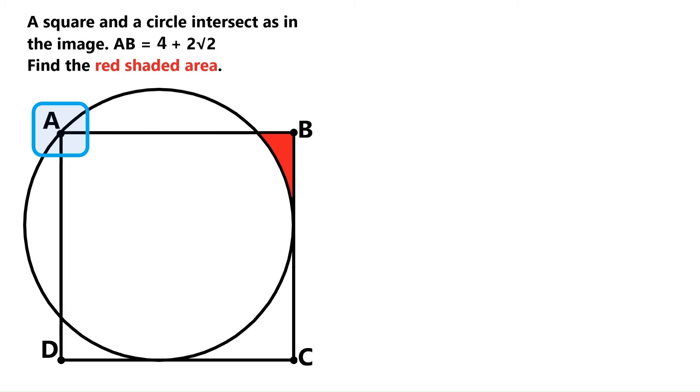This is the corner of the square, so we've got a 90 degree angle here. This angle is inside this circle, and the right angle inside the circle is always enclosed by its diameter. So, we can draw the circle's diameter here.